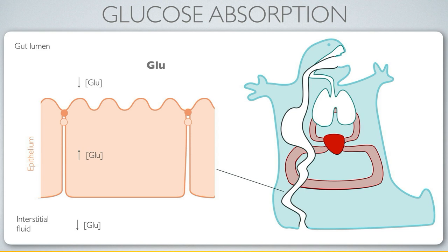Instead there's a sort of indirect use of ATP, again supplied by sodium-potassium ATPase. Sodium-potassium ATPase transports potassium and sodium, and in particular we're going to focus on the effects of sodium — it makes the concentration of sodium really low in the interior of the cell.